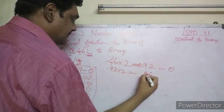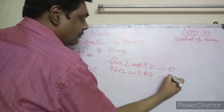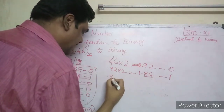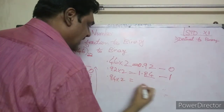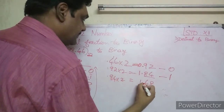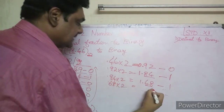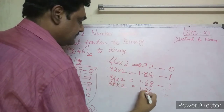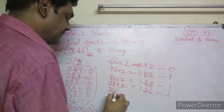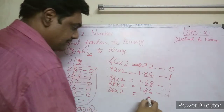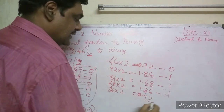Next, take 0.92 and multiply by 2: 0.92 × 2 = 1.84. The integer part is 1, so record 1 and carry forward 0.84. Then 0.84 × 2 = 1.68. The integer part is 1, record 1, carry 0.68. Then 0.68 × 2 = 1.36, record 1, carry 0.36.